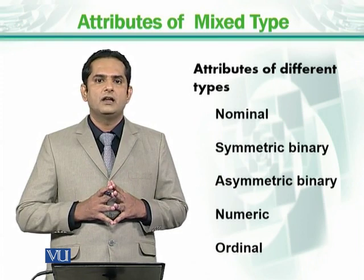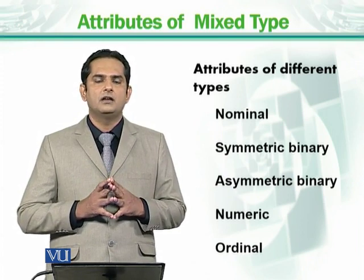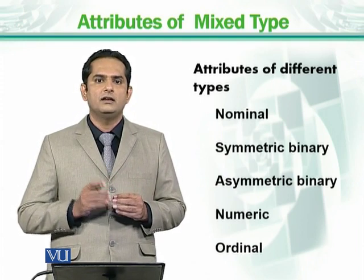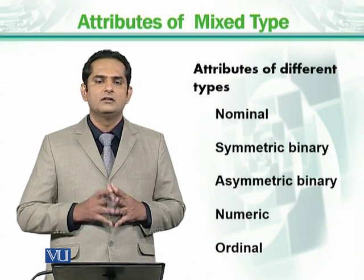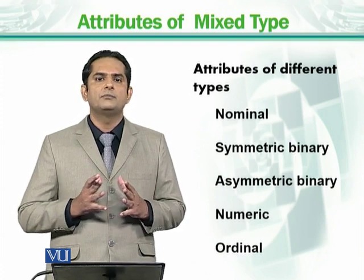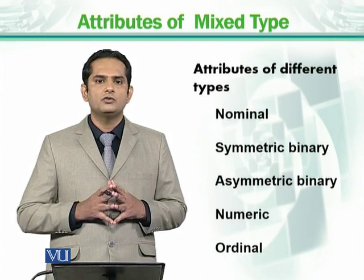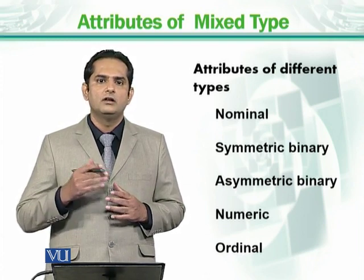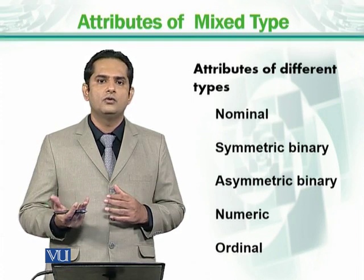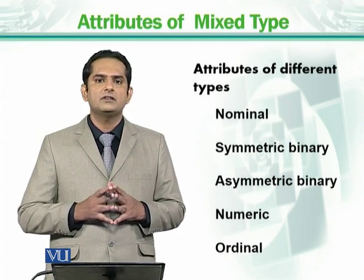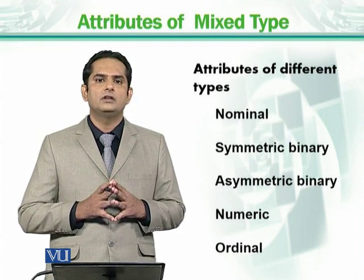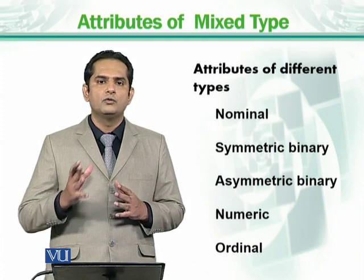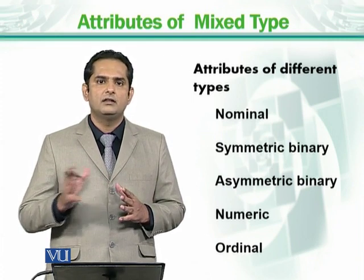Ordinal data has such a data in which we need to store the data. Let's say I will take an example of temperature. When we store the temperature, we say it is either hot, then mild, cold, very cold and so on. So now we have different intervals or orders. We have how we have to move from one place to the other place.